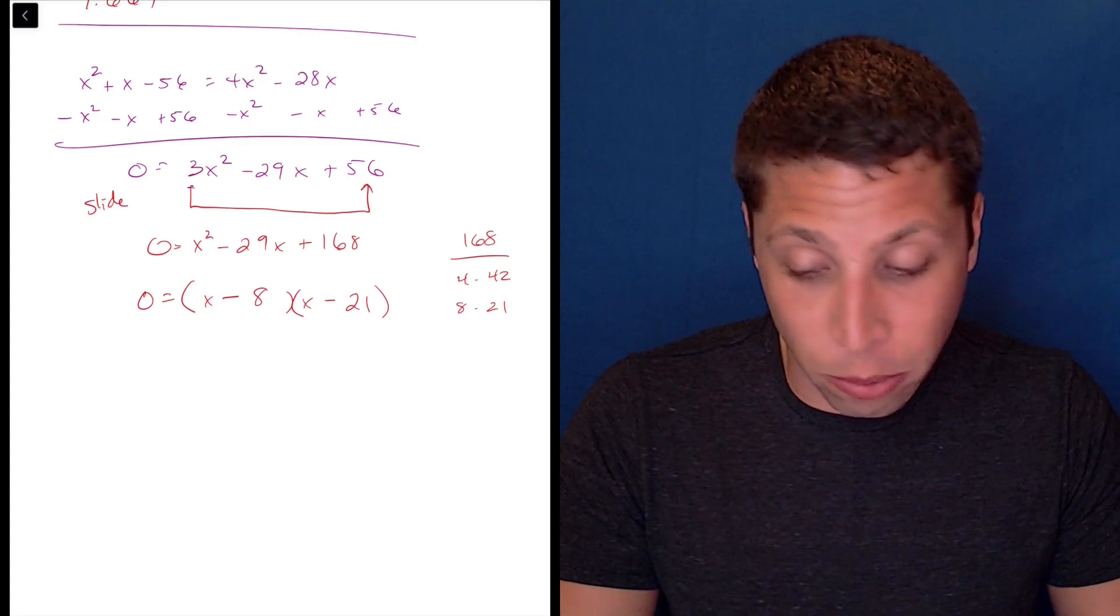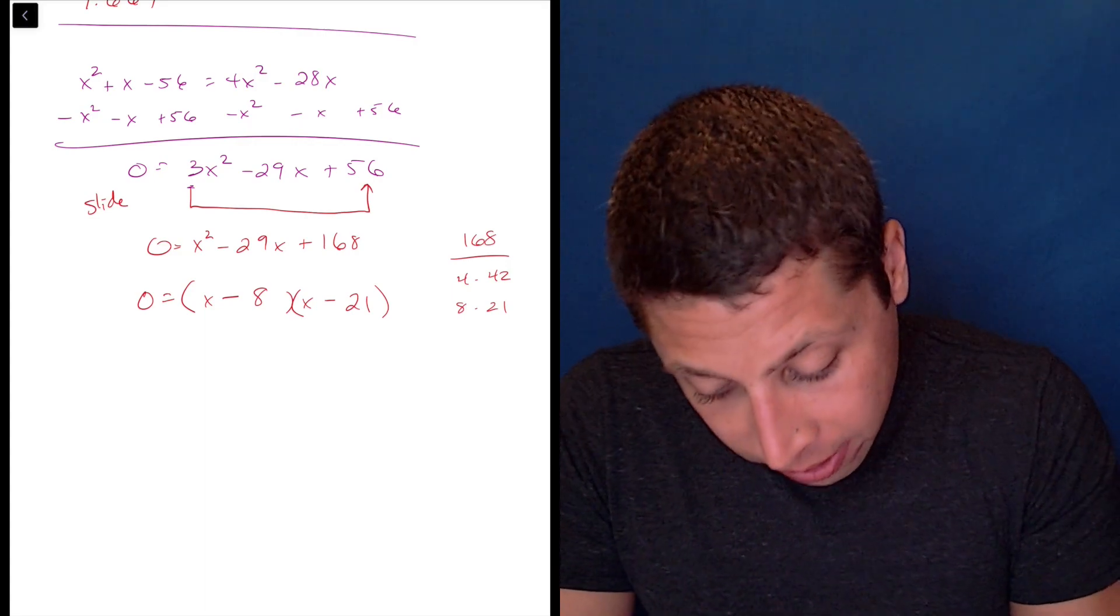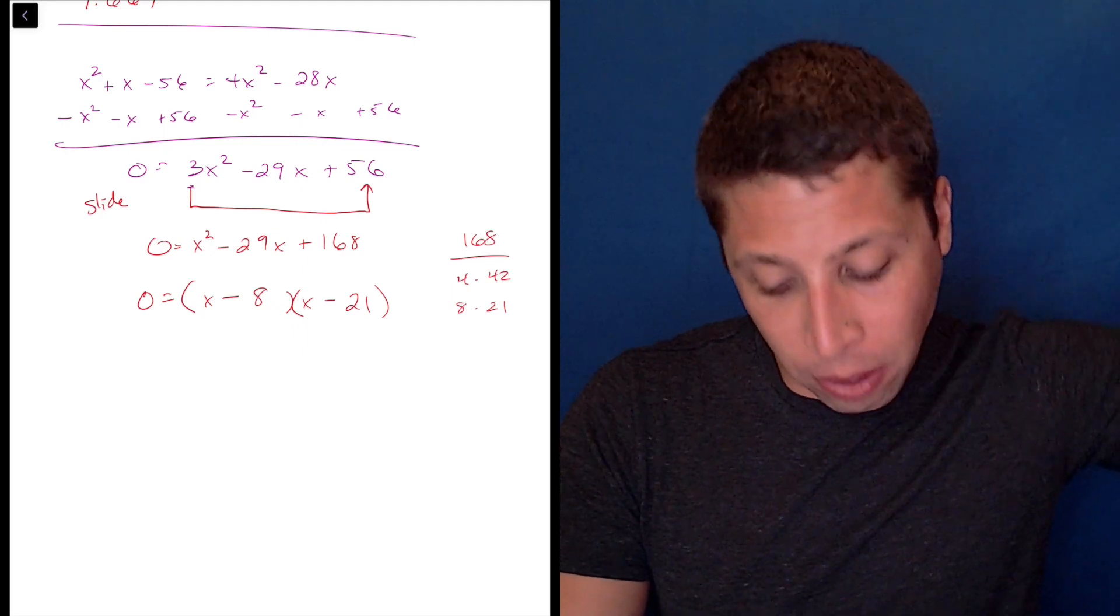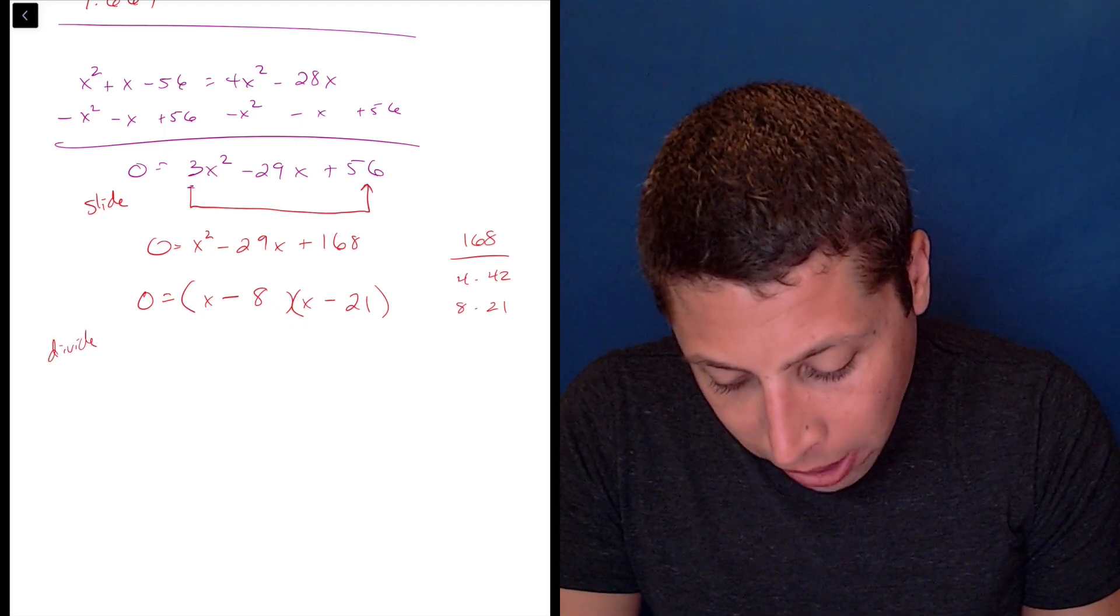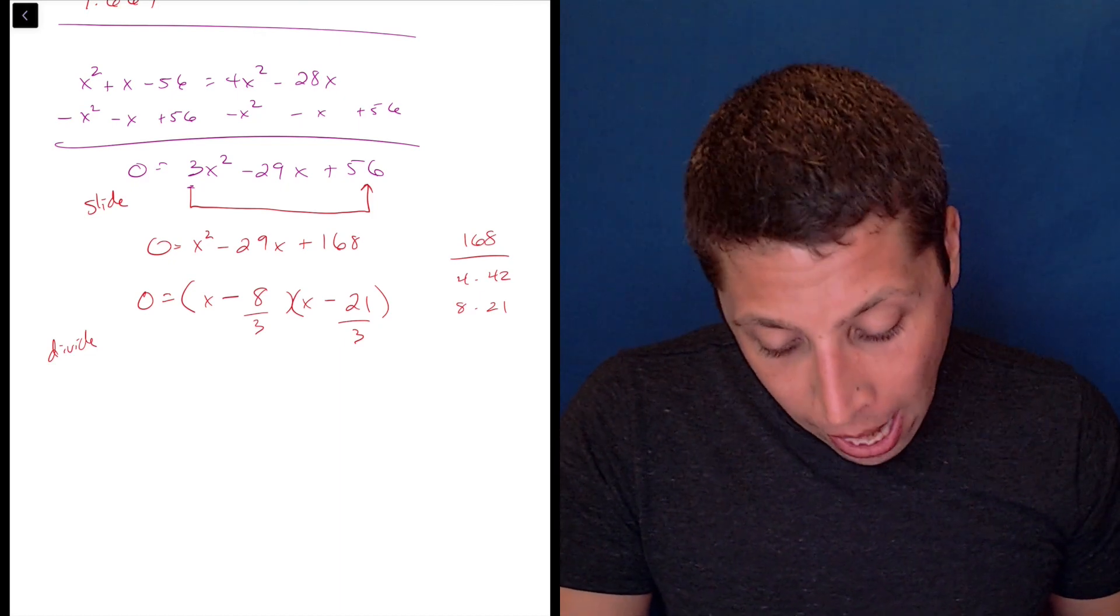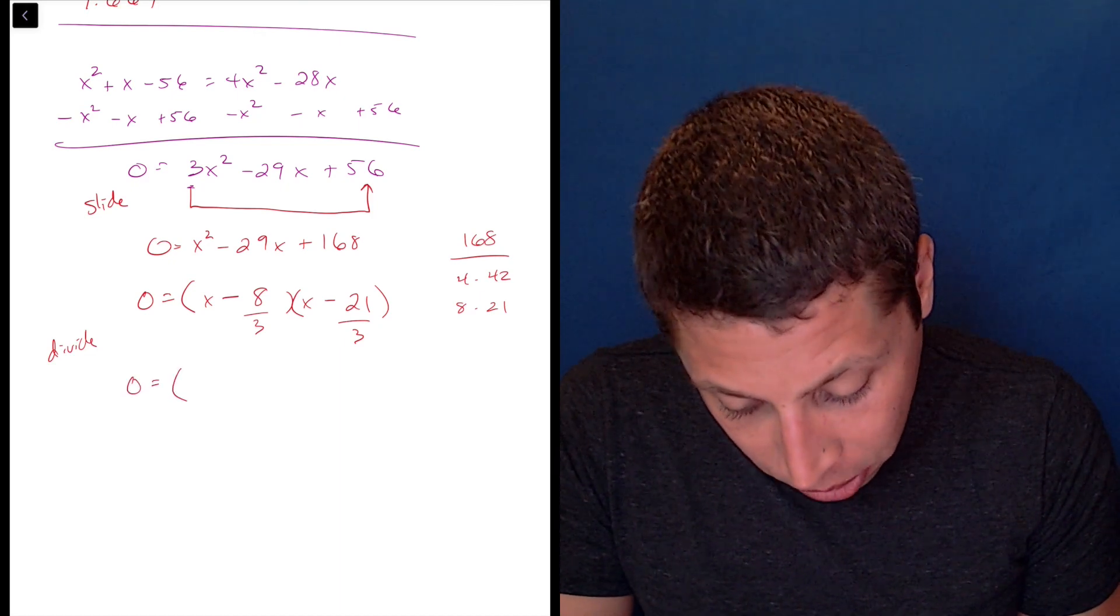8 times 21 multiplies to 168. But because I slid that 3 out of the way before to make it easier to factor, I have to divide it back out. So what that means now is I divide both of these by 3. And you can see if I do that where my numbers came from before.